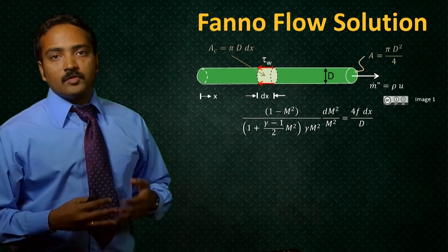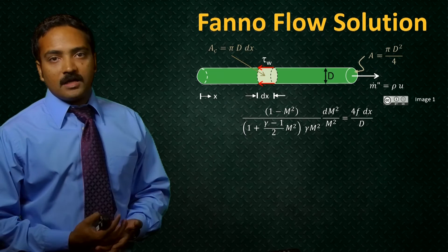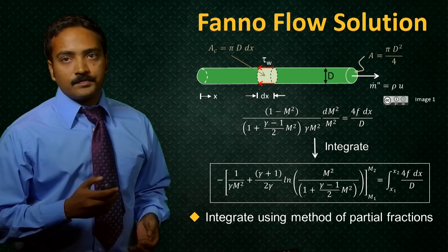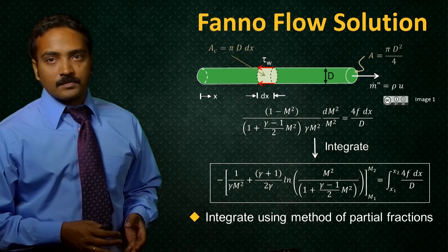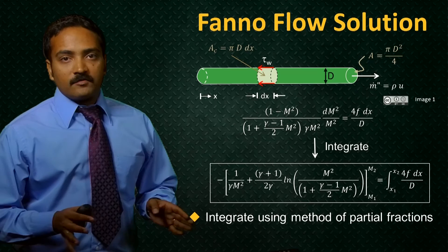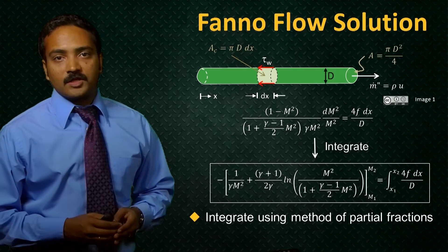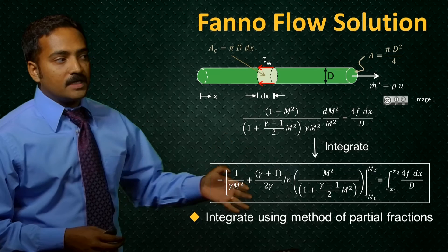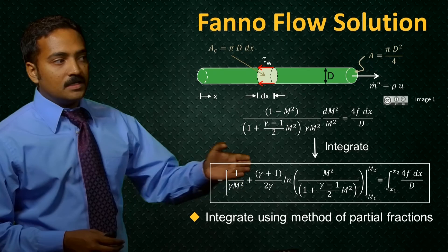Now let's take it one more step forward. We just had the differential form of the equation previously, and we could understand the physical meaning from that. But what we really like is to have a final solution for flow with friction. To do that, we need to integrate this differential equation, which is in terms of the Mach number, applying the method of partial fractions. We have now a final expression, which is all in terms of Mach number on the left hand side and the ratio of specific heats, and on the right hand side we have an integral which goes from x1 to x2 of 4 times f times dx over d.